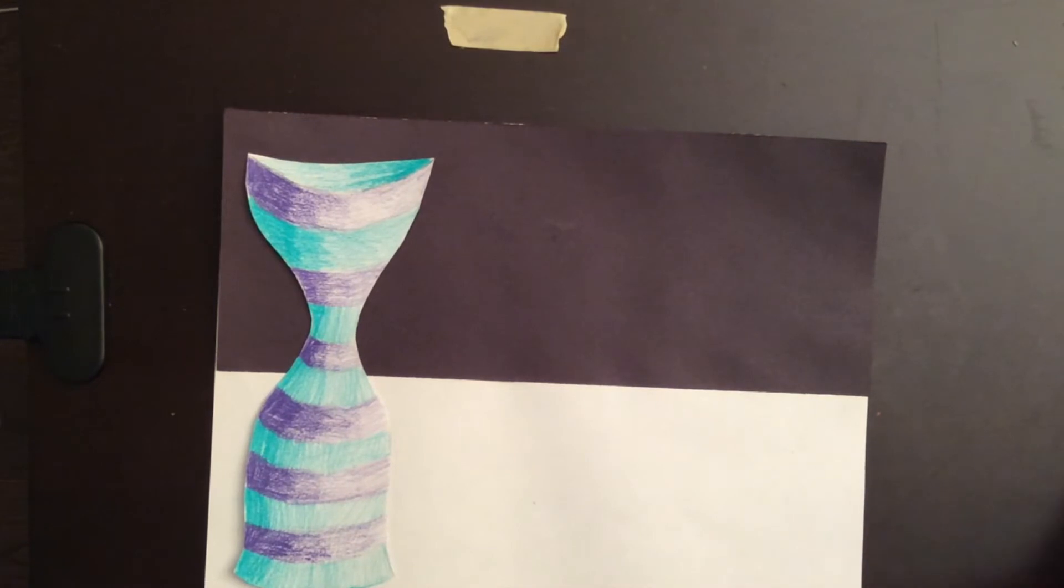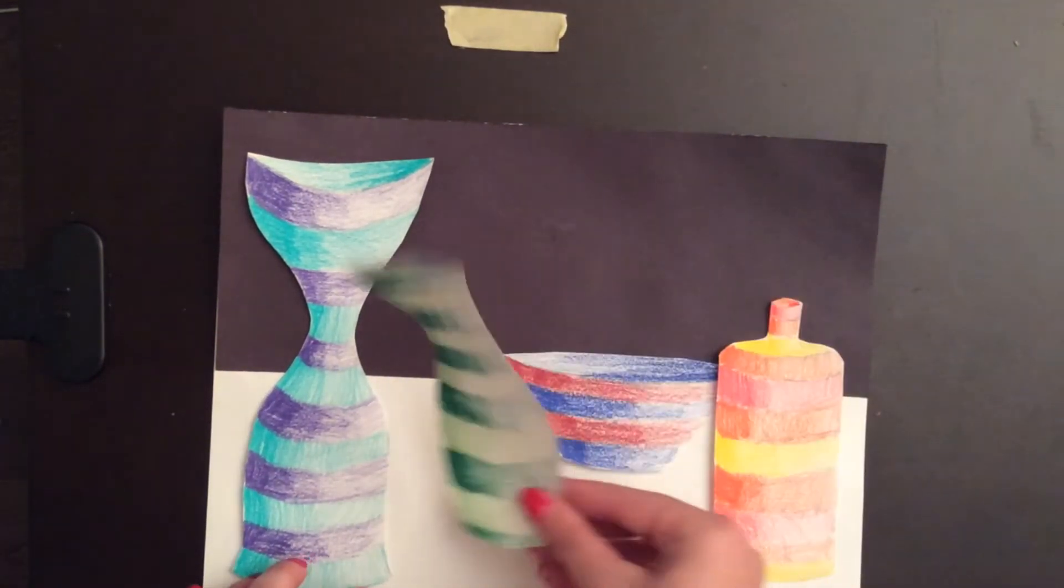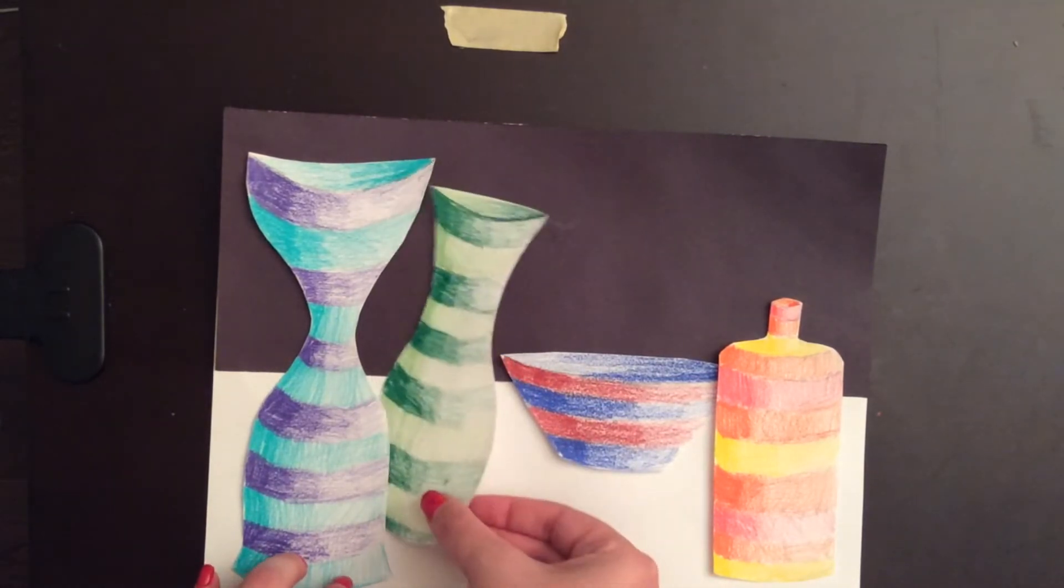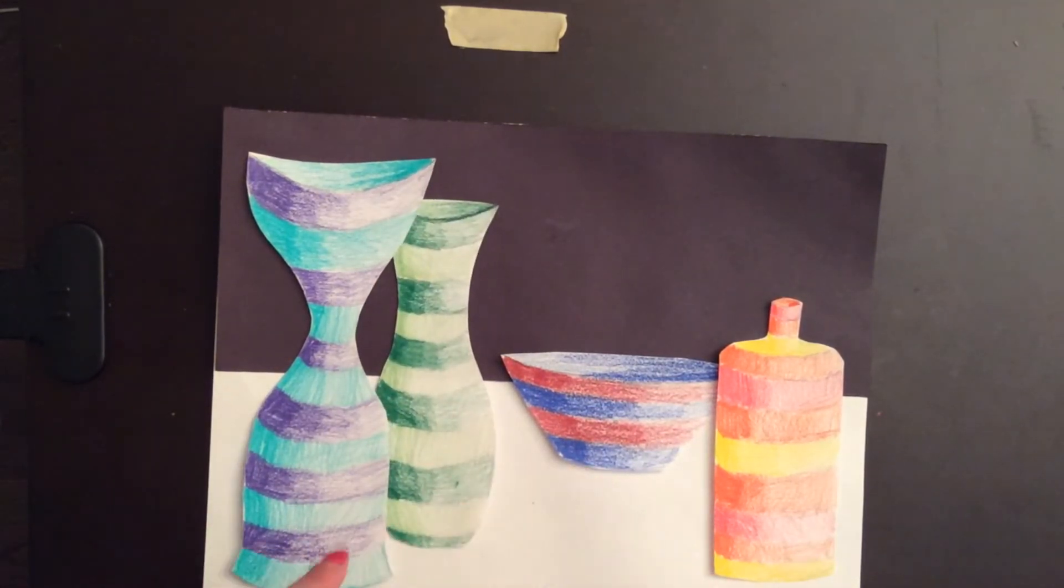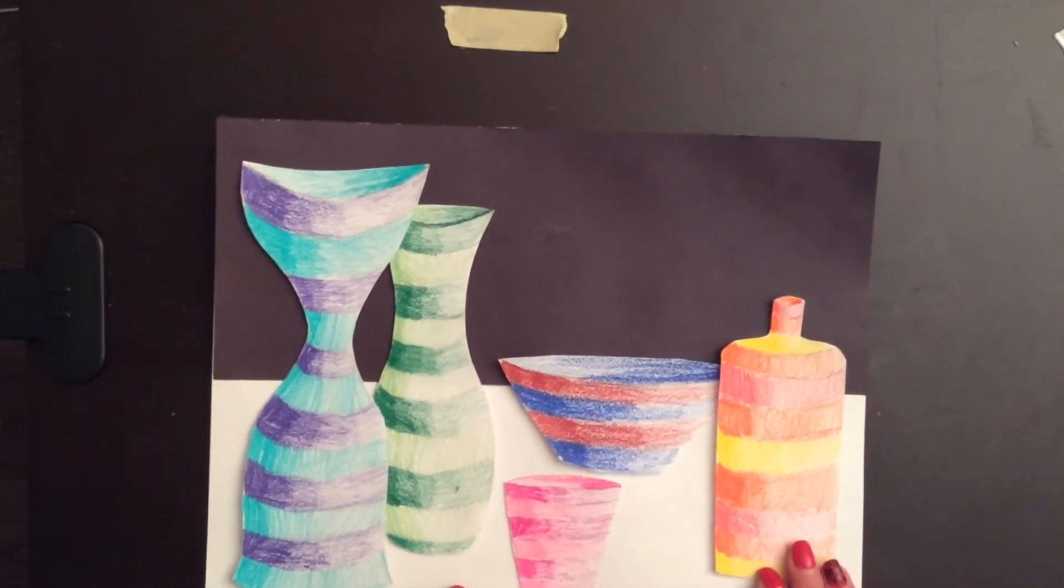You can rotate, you can continue taking them off and putting them back on until you feel happy. Remember the objects that are overlapping means that there's an object in front of another object, so that green vase I just placed is behind the purple and turquoise vase.